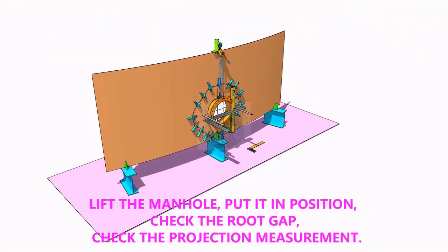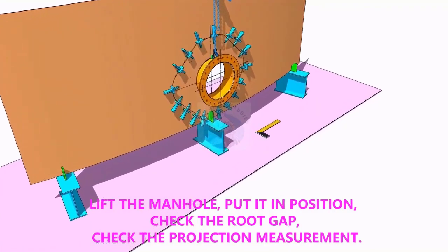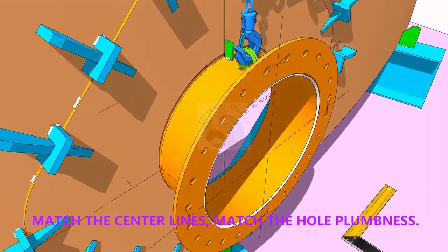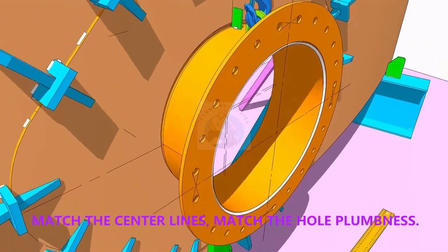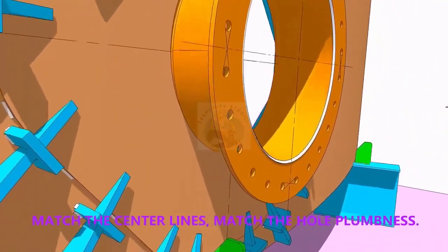Put the manhole in its position. Correct the plumbness, the projection of the manhole, and the gap. Check again the plumbness.